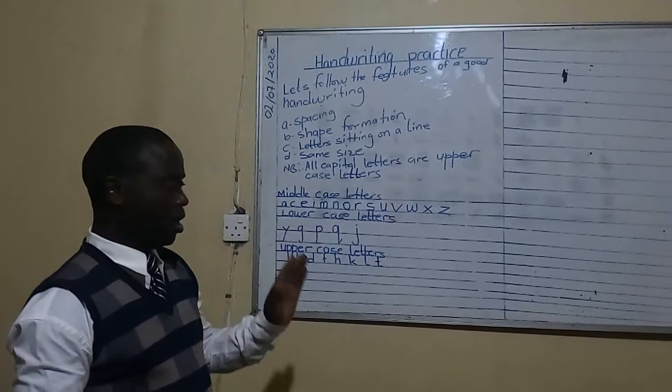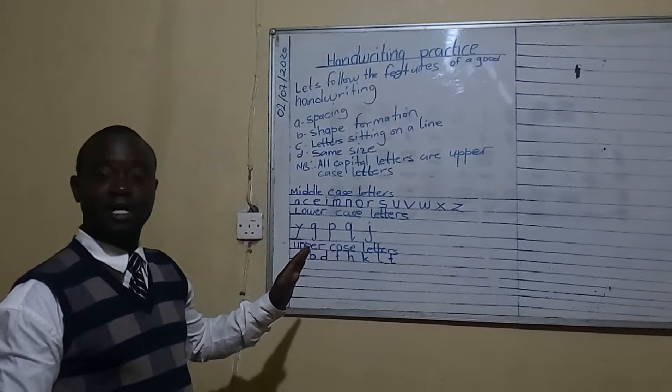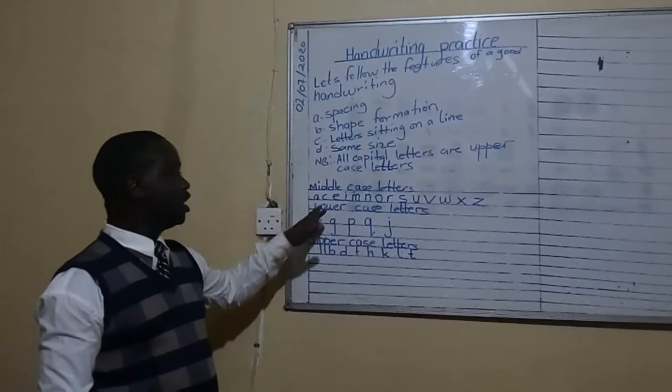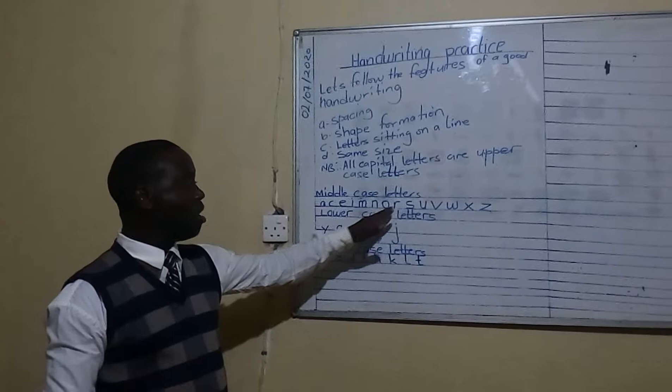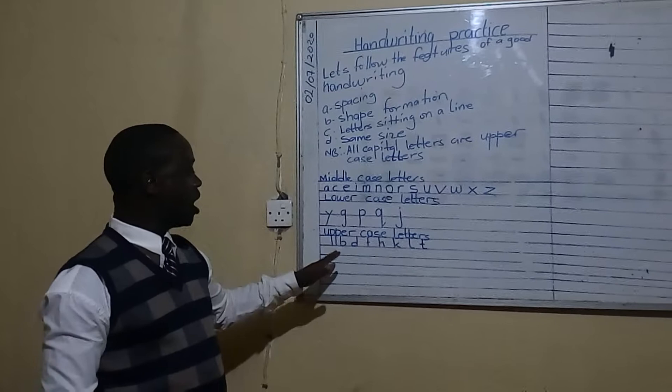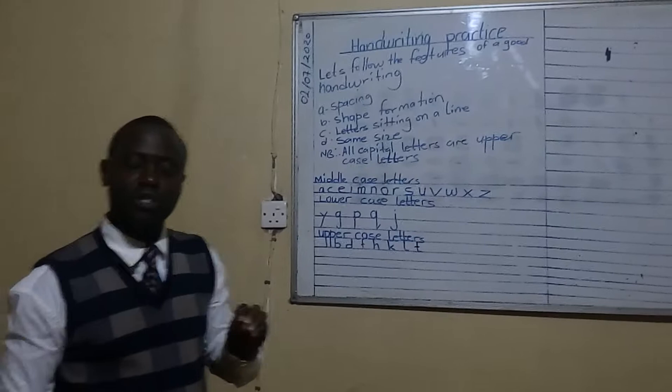If you were to review, we had a look at the different categories of letters. We have the middle case letters, the lower case letters, and the upper case letters. The middle case letters include: A, C, E, I, M, N, O, R, S, U, V, W, H, C. The lower case letters include: Y, G, B, Q, J. And the upper case letters include: B, D, F, H, K, L, T. Those are the different categories of letters you normally use while writing.